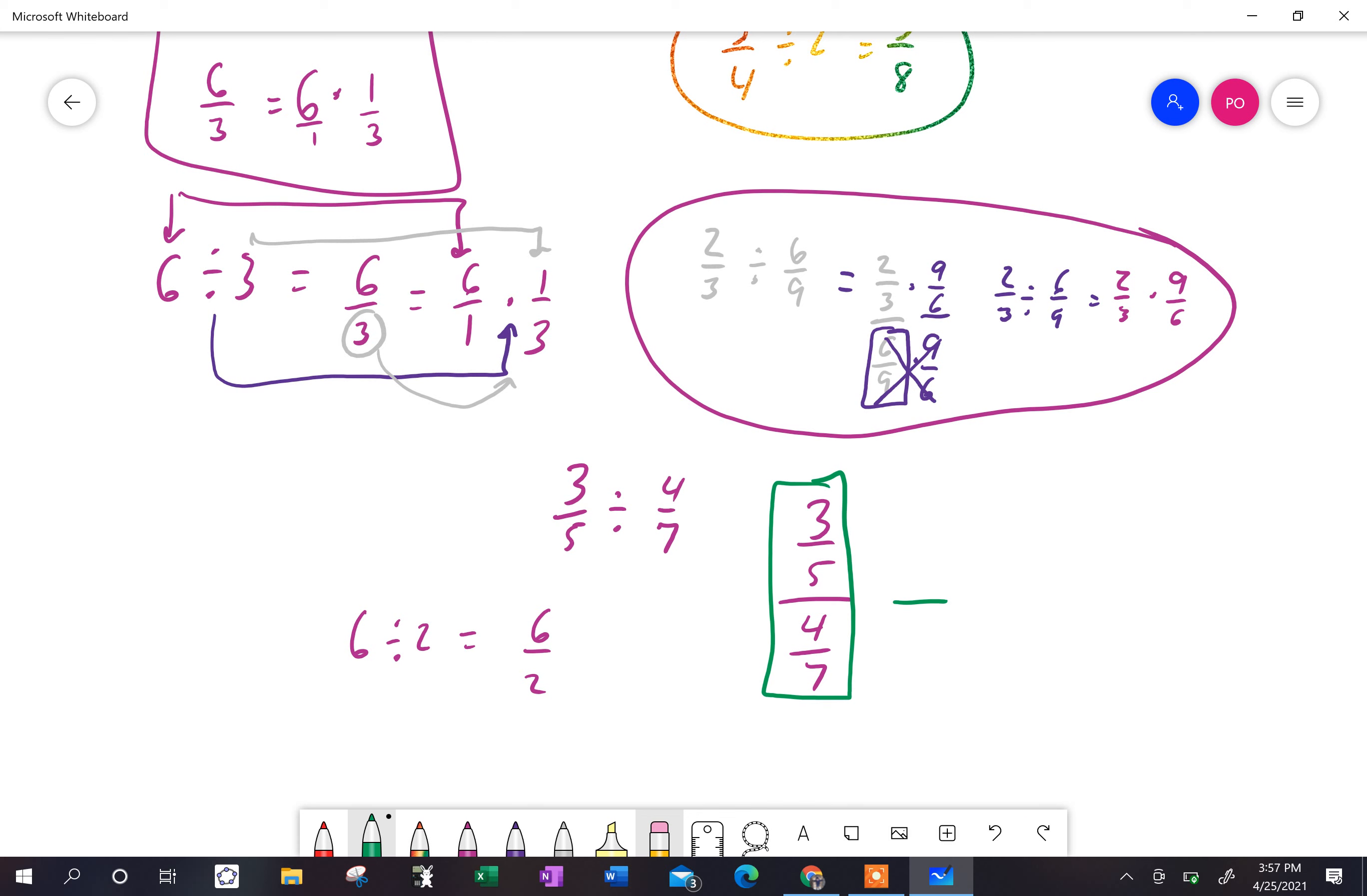But I'm not really going to, well, I am going to really multiply by one. But the way I'm going to make that one is I'm going to multiply it by the reciprocal of the denominator because four times seven is 28 and seven times four is 28. So that all becomes one.